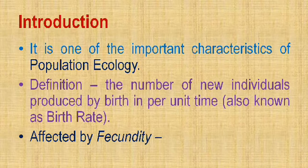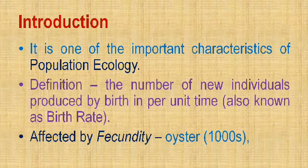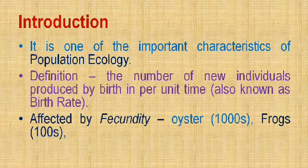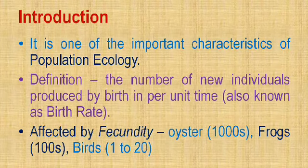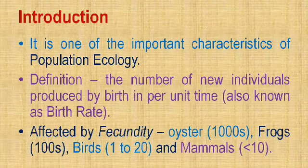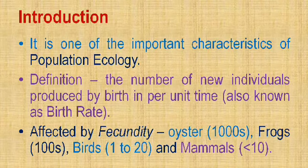Fecundity always varies with species. In case of oyster mollusk, it lays thousands of eggs. Frogs lay hundreds of eggs. Birds may lay eggs from 1 to 20 depending on the species. Mammals give birth to young ones — except the duckbill platypus which lays eggs — and mammals produce a maximum of around 10 offspring, mostly 1, 2, or 3 at a time.